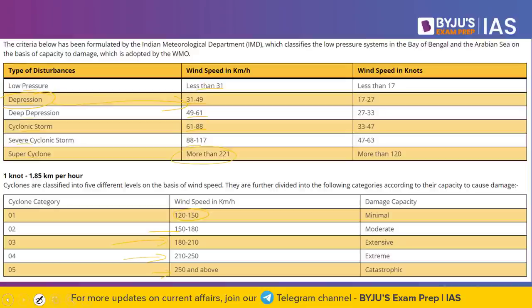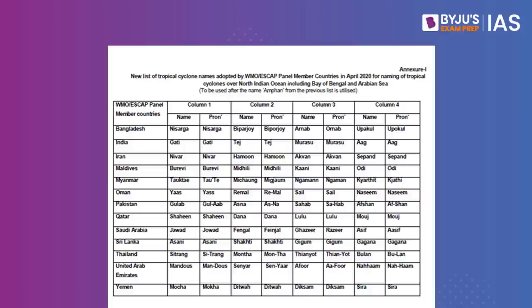Who has given the name Cyclone Mandus? The name Mandus was given by the United Arab Emirates. It is pronounced as 'Mandos' and is an Arabic word meaning 'treasure box.' When it comes to naming, cyclones are named in sequence — for example, Nisarga, Gati, Niva, and so on. The next tropical cyclone will be Mocha, followed by Biparjoy, then Tej, and so forth.